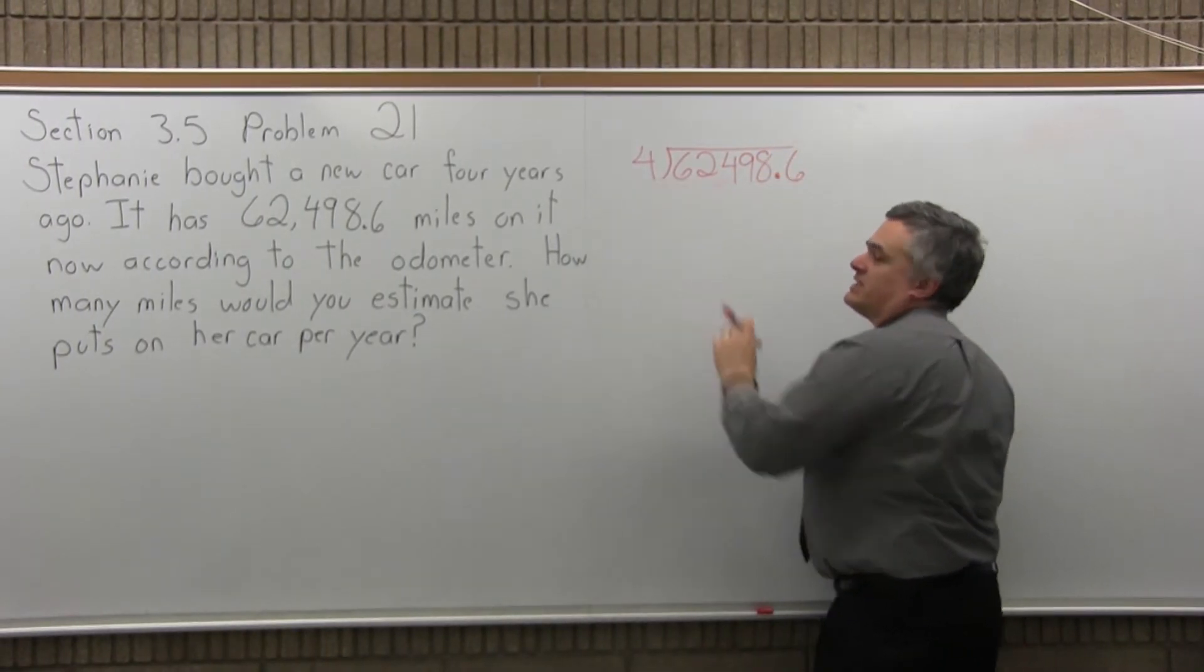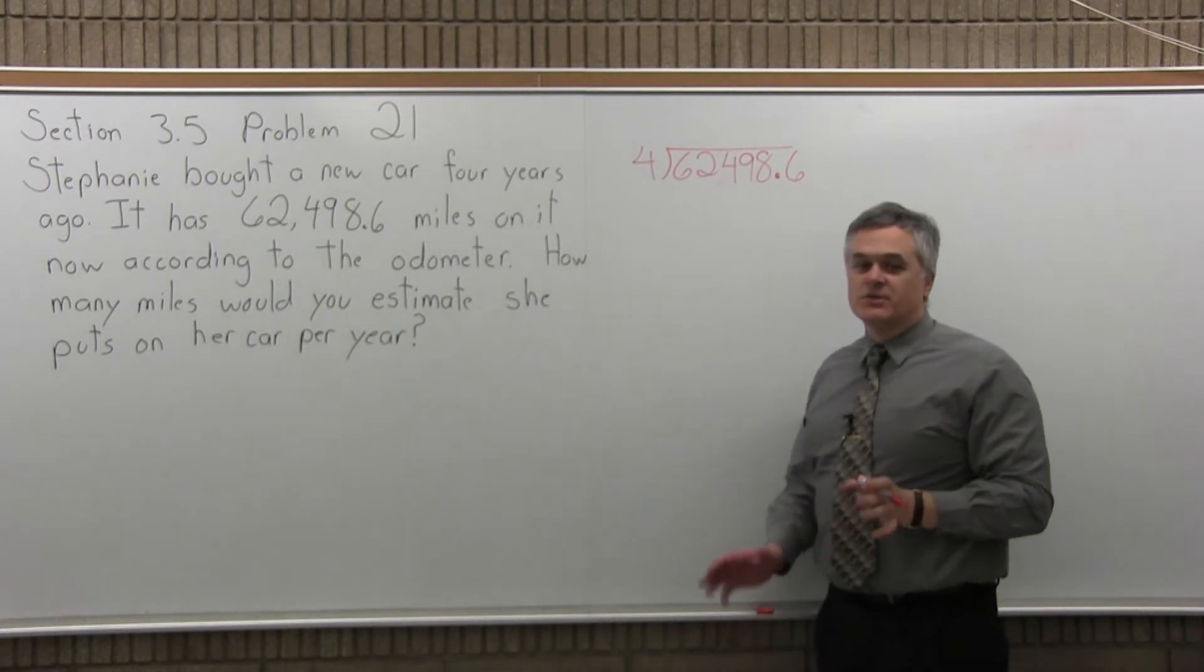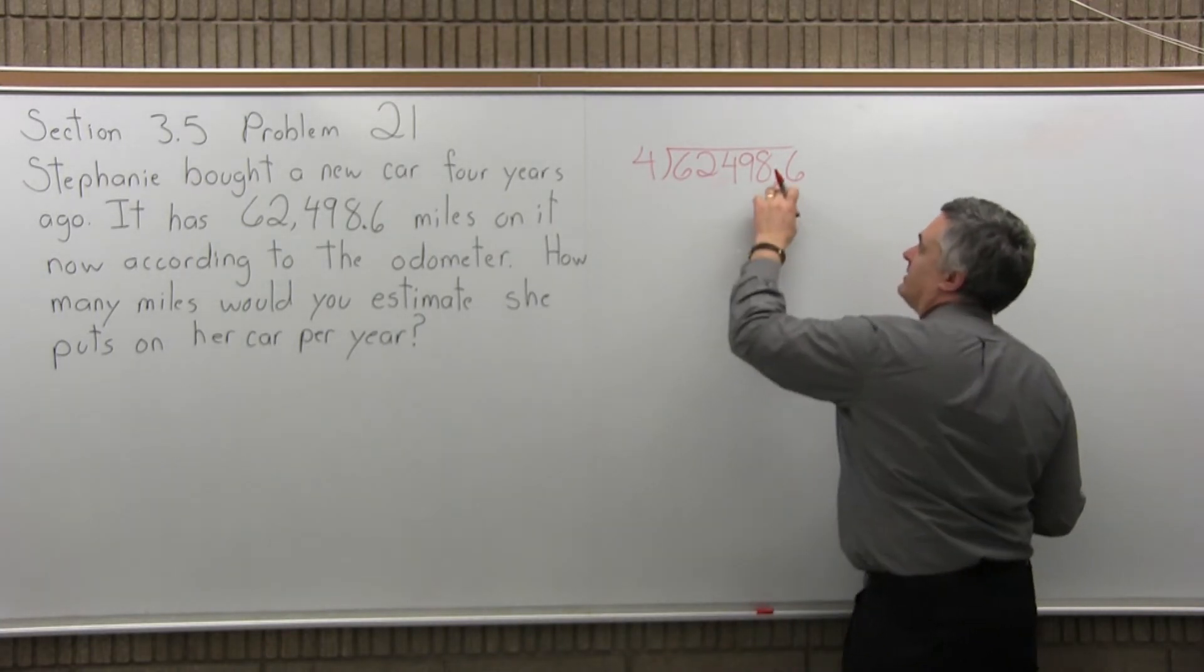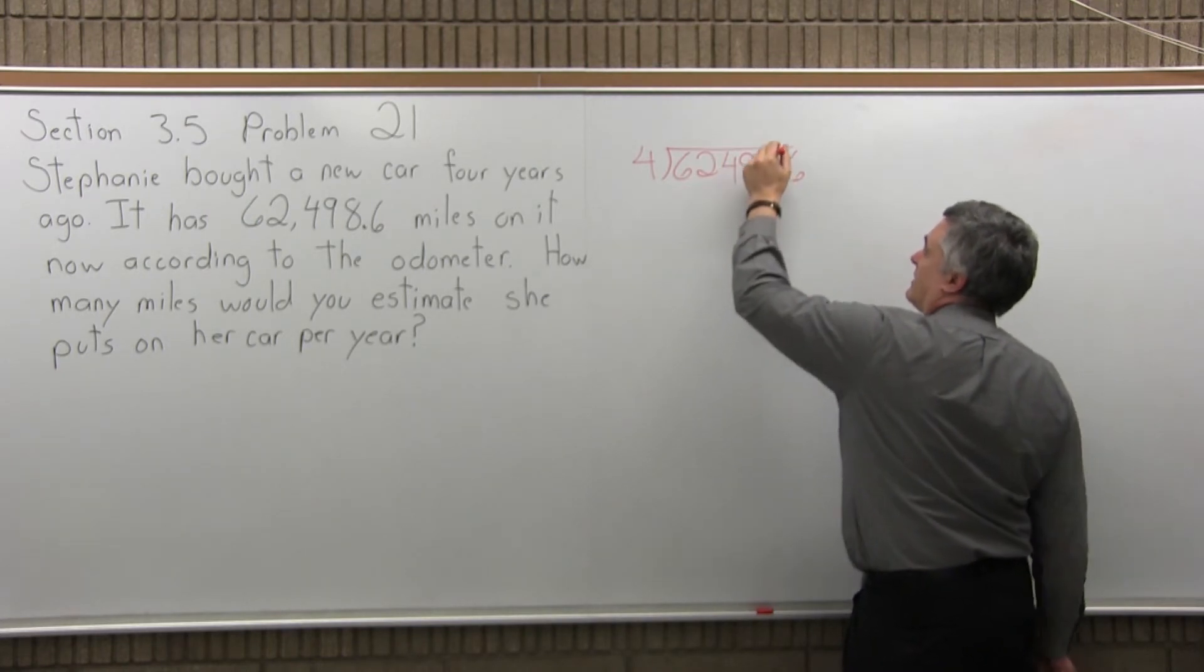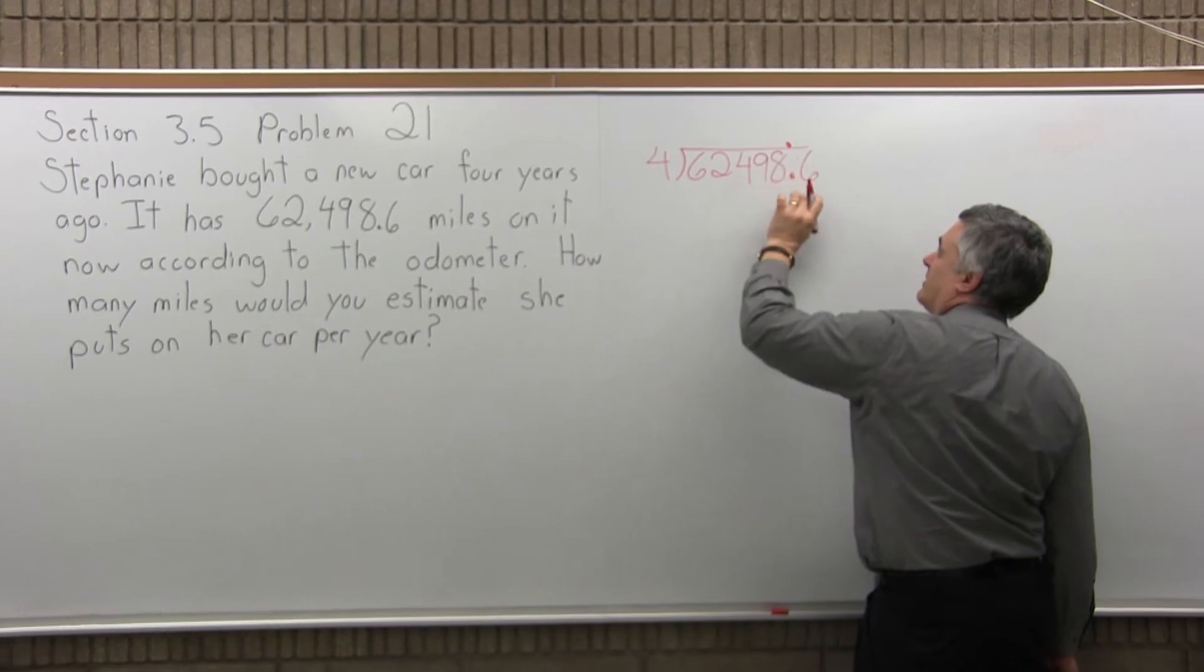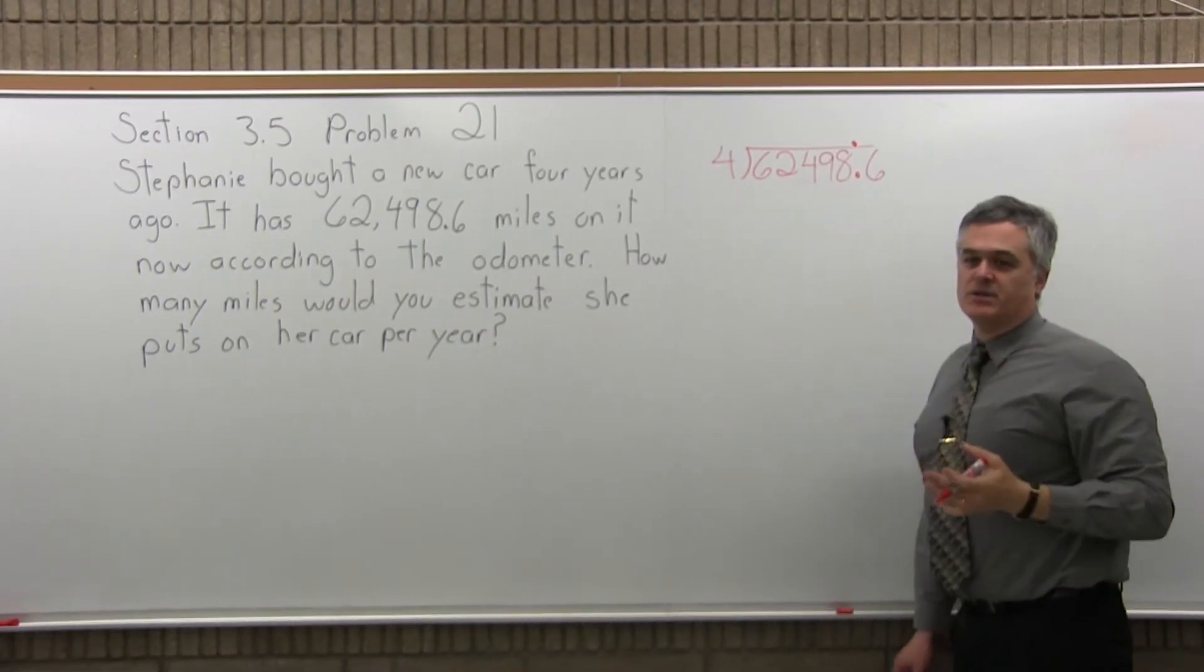Now there's no decimal with the four in front of the division symbol, so I don't have to worry about moving the decimal around. There is a decimal for the number under the division symbol. That's fine. In fact, as I get my answer, it's going to come up straight up vertically and come into the answer.